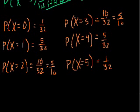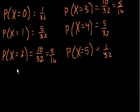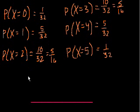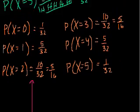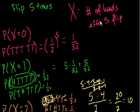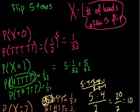Let's draw our probability distribution. The x-axis will show the different values our random variable can take. Notice these are all discrete values — particular finite numbers. The random variable, number of heads after five flips, can only be 0 through 5, and can't be a non-integer. Because there's a finite number of values, we have a discrete probability distribution.